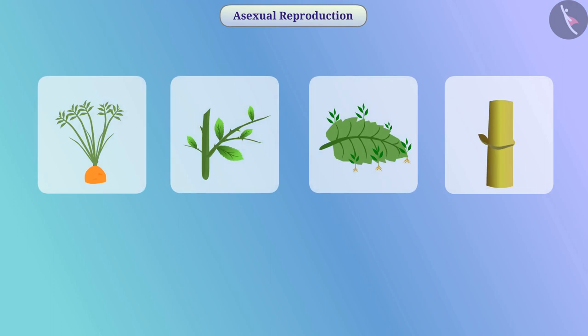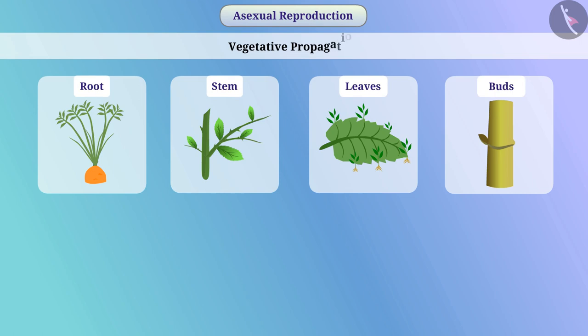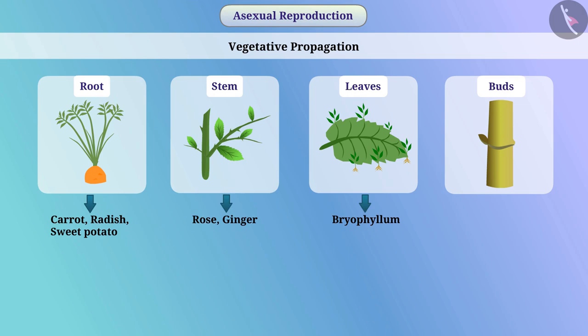In favourable circumstances, some plants can be grown from their parts like root, stem, leaves, or buds. This is called vegetative propagation. For example, carrot, radish, and sweet potato can be grown from the root of the plant. Rose and ginger can be grown from the stem. Bryophyllum can be produced from the leaves of plants. Sugarcane and various types of grasses can be produced from buds.